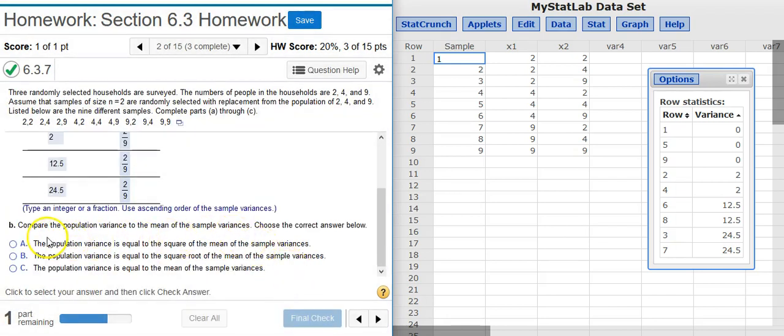Okay, now part B is saying that we need to compare the population variance to the mean of the sample variances and then choose the correct answer below. So first let's get these values here. The population variance, well to get that in StatCrunch we're going to have to put the population here into StatCrunch because all it loaded was the actual samples. We need the population. So here in the problem statement it says the population is 2, 4, and 9.